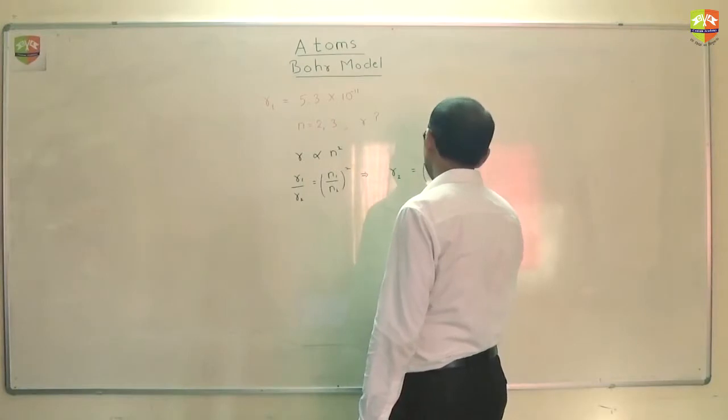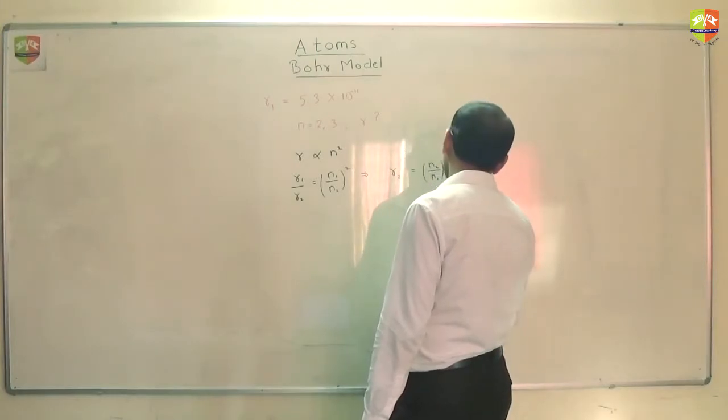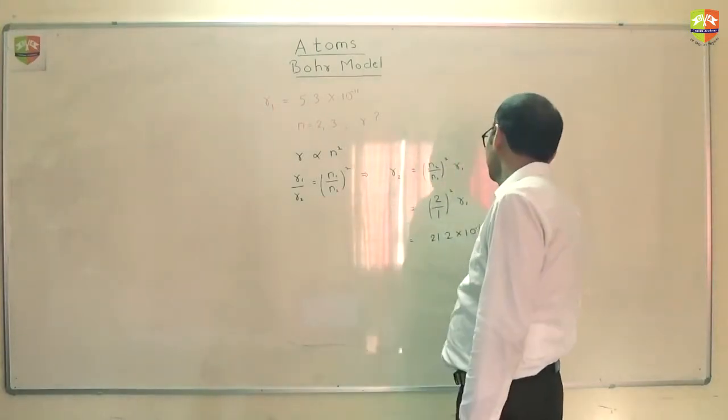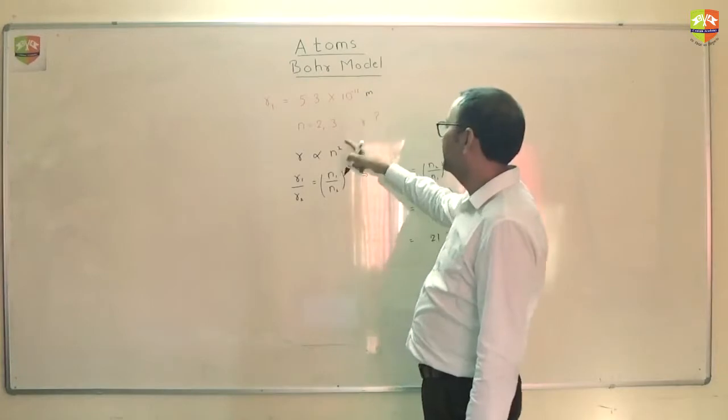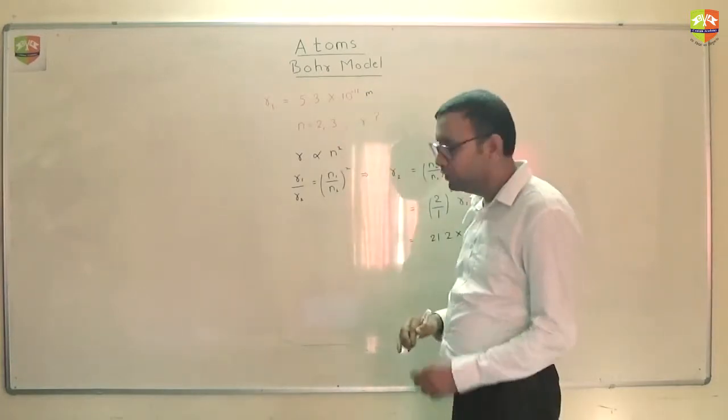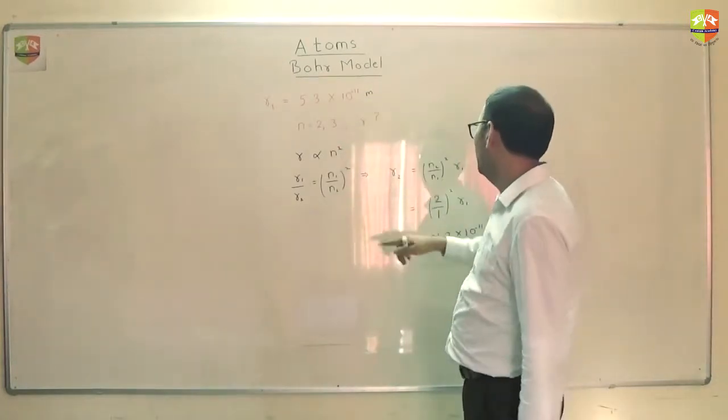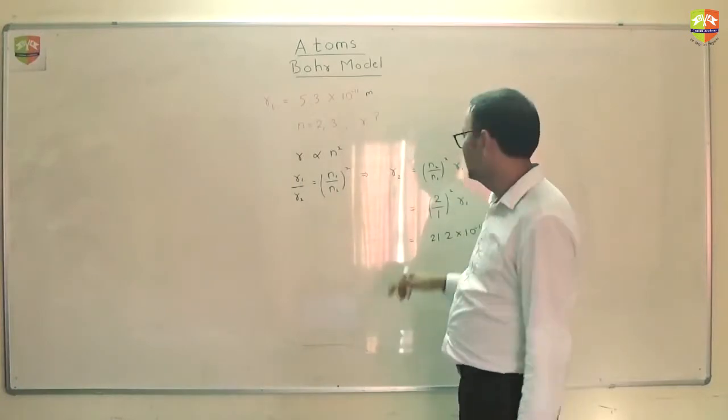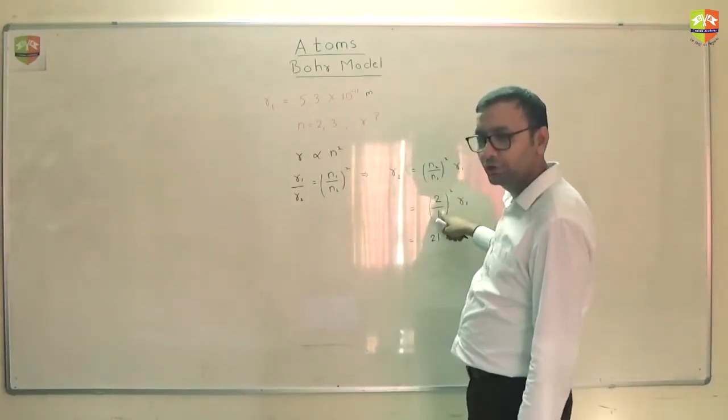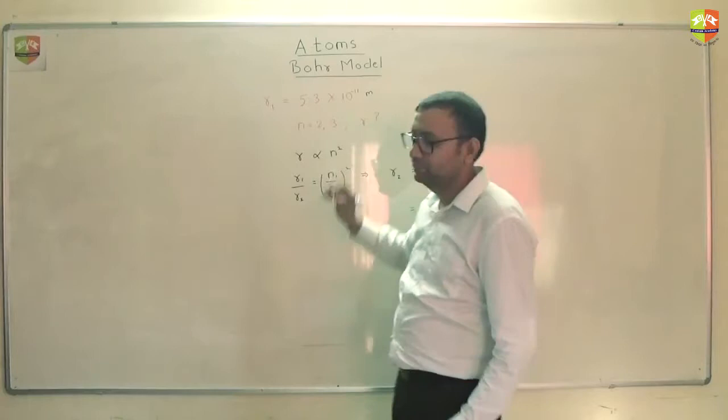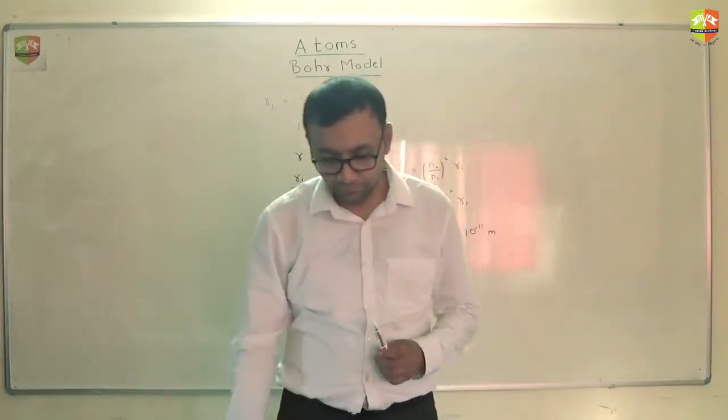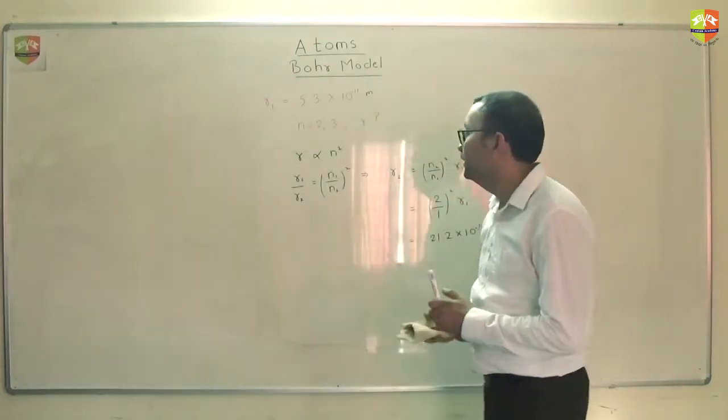Like that you can get for n equal to 3 also. For n equal to 3 it will be 9 into this. 3 by 1 whole square. So 9 into that. Any doubt?